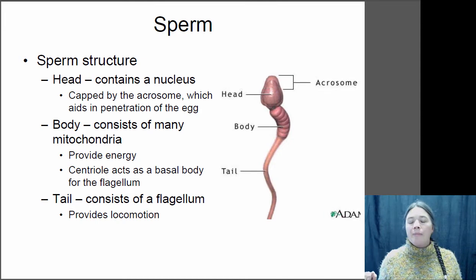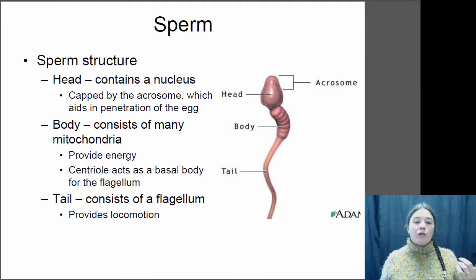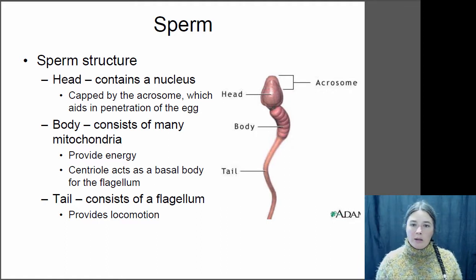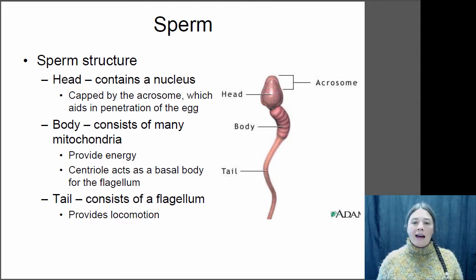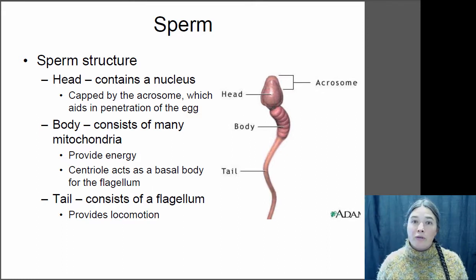Then you have the body of the sperm — the powerhouse of the sperm. It's full of mitochondria and is breaking down sugars, making the sperm able to move using its flagella, which is the tail. It basically whips around and allows the sperm to swim through a liquid medium. Sperm are mobile and can go pretty long distances. They often have chemoreception that allows them to detect signals put out by eggs and swim in the appropriate direction — particularly important for external fertilization like many aquatic organisms have.